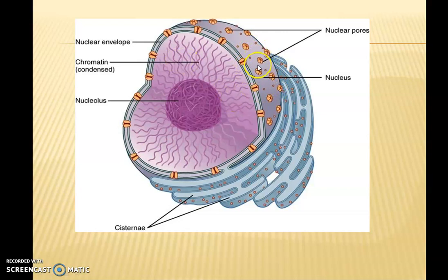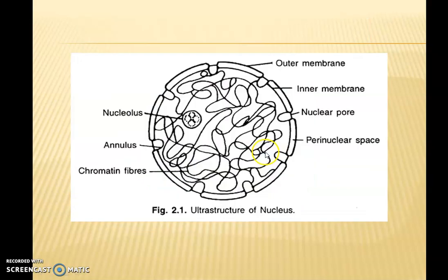In the nuclear membrane there are several pores. These pores are associated with certain proteins which together form the nuclear core complex. Here in this figure you can see the nucleus. The first component is the nuclear membrane — it is a double layer, with an outer membrane and an inner membrane. In between there is a space called the peri-nuclear space.